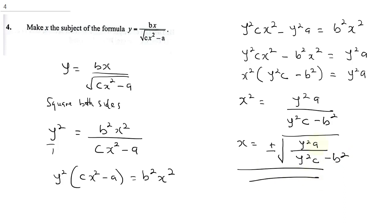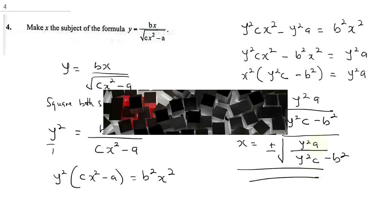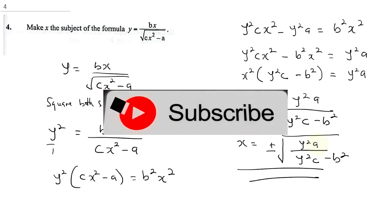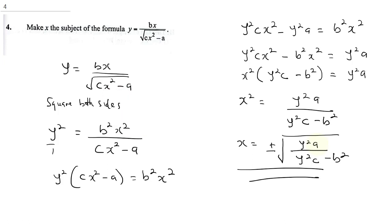Therefore X equals the square root of plus or minus Y squared A all over Y squared C minus B squared. Final answer. So as easy as that, you can also solve this question. If this is your first time coming to this channel, don't forget to hit the subscribe button and also click on the notification bell so that you can get more KCSE videos from us.